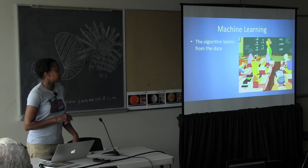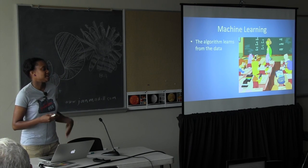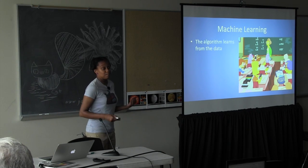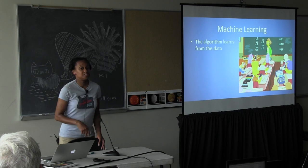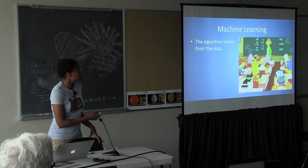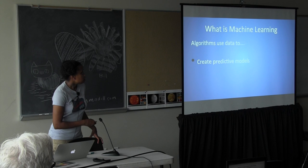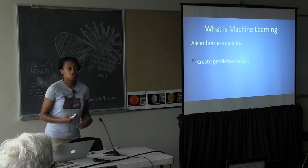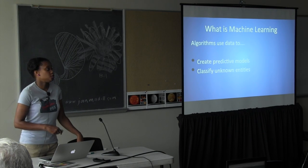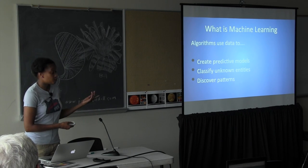Machine learning is basically an algorithm learning from the data that you're already giving it. You can also call this kind of instance-based learning. So instead of you giving it a command, it takes the data you already have and makes decisions. The algorithm usually uses the data to create a predictive model, to classify unknown entities, and discover patterns.